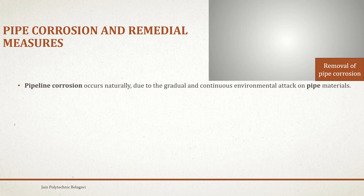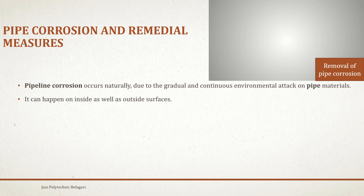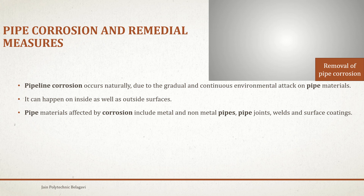Pipe corrosion occurs naturally due to the gradual and continuous environmental attack on pipe materials. It can happen on inside as well as outside surfaces. Pipe materials affected by corrosion include metal and non-metal pipes, pipe joints, welds, and surface coatings.